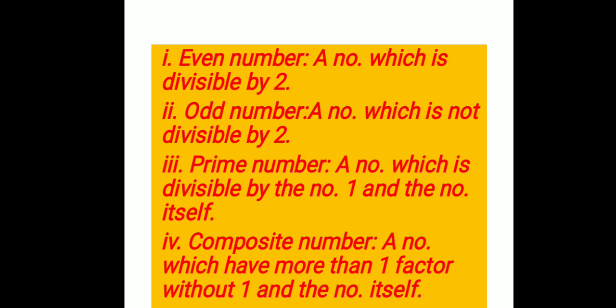For example, two — in two you can identify that it is divisible by one and the number itself, and it doesn't have any other number as a factor. Fourth comes composite number — a number which has more than one factor without one and the number itself.